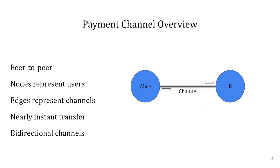In the Lightning Network, two users can create a so-called payment channel between each other in a peer-to-peer fashion and then almost instantly transfer money between each other. Users and the corresponding channels can be seen as a graph in which the users represent nodes and the channels represent the edges of the graph. The channels are bidirectional, meaning that money can be transferred in both directions.